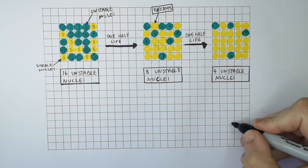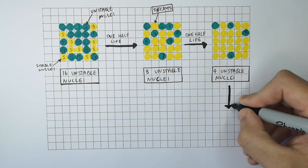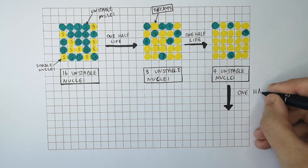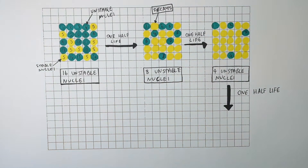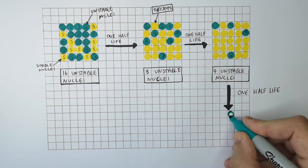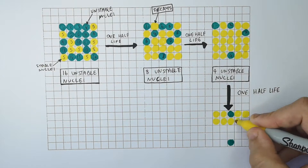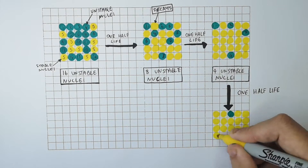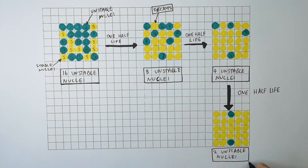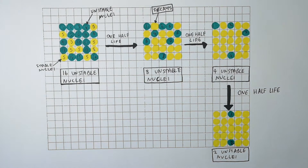4 of the unstable nuclei are going to decay and become stable. One half-life later, we go from 4 unstable radioactive nuclei to 2 unstable radioactive nuclei, whereby 2 of the 4 decay and become stable nuclei.